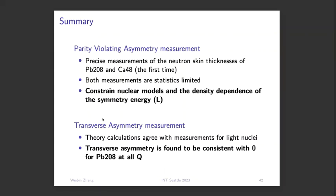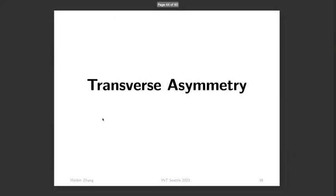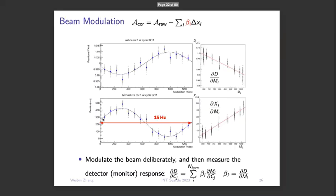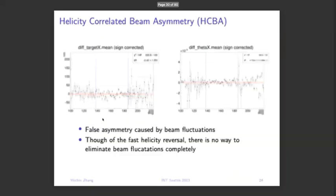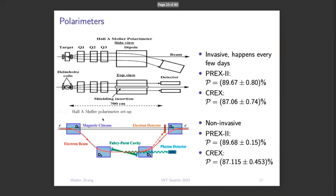In summary, P-REX2 and C-REX make precise measurements of neutron skin thickness of lead-208 and calcium, which constrains nuclear models and the density dependence of the symmetry energy. For transverse asymmetry measurements, our results agree with theoretical predictions for light nuclei but not for heavy nuclei. Regarding the question of model dependence in extracting neutron skin for calcium and lead: the extraction does involve some model dependence in the theoretical relationship between the weak radius and neutron skin.